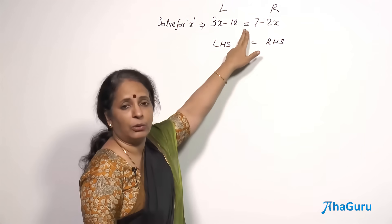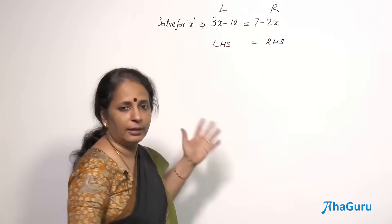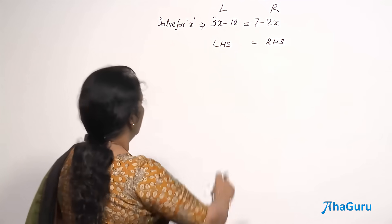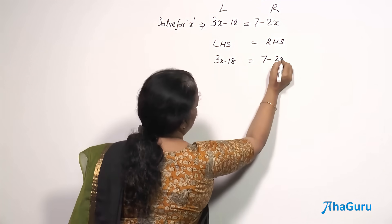And equations will surely have this equal to sign. This is something that should be constantly maintained. You cannot have suddenly that equal to sign going away. So on the left hand side, you have 3x minus 18 which is equal to 7 minus 2x.